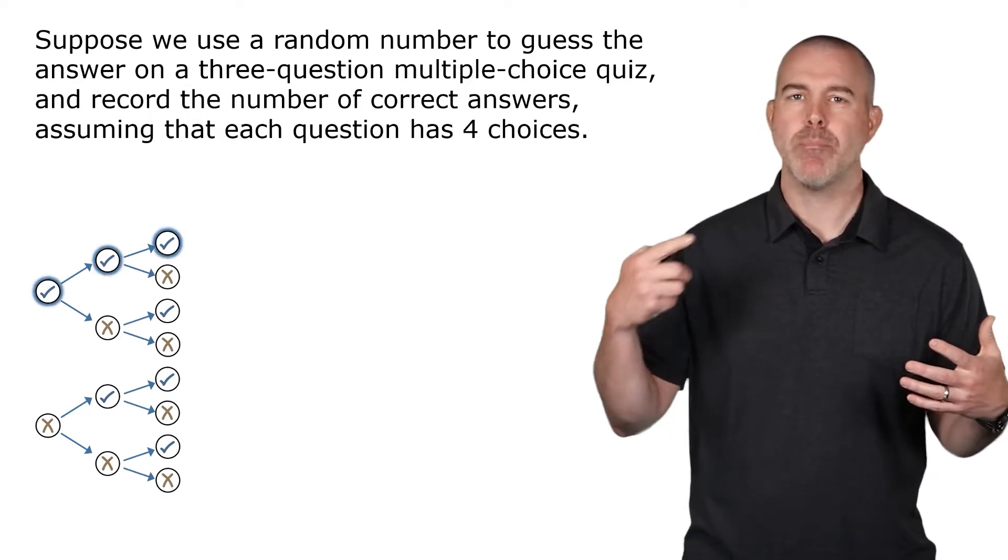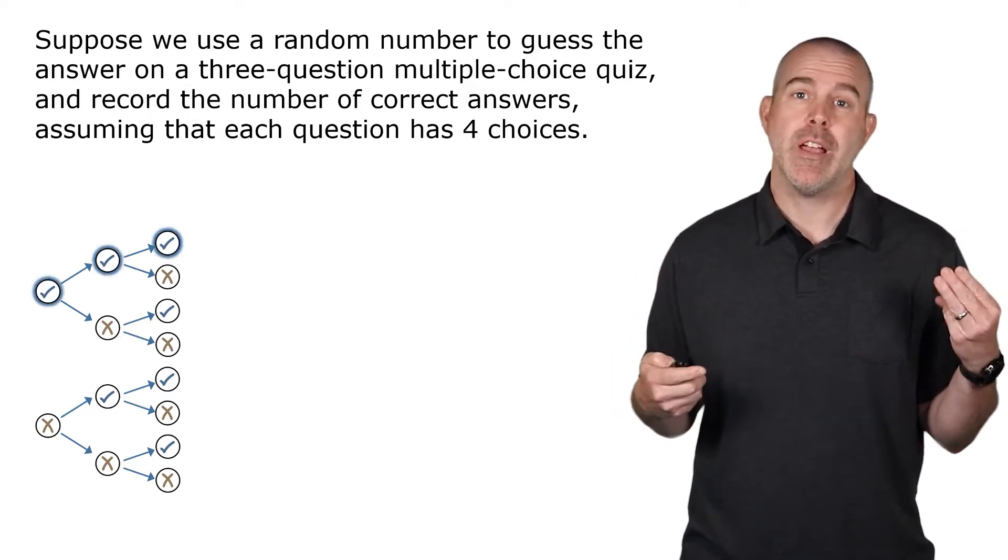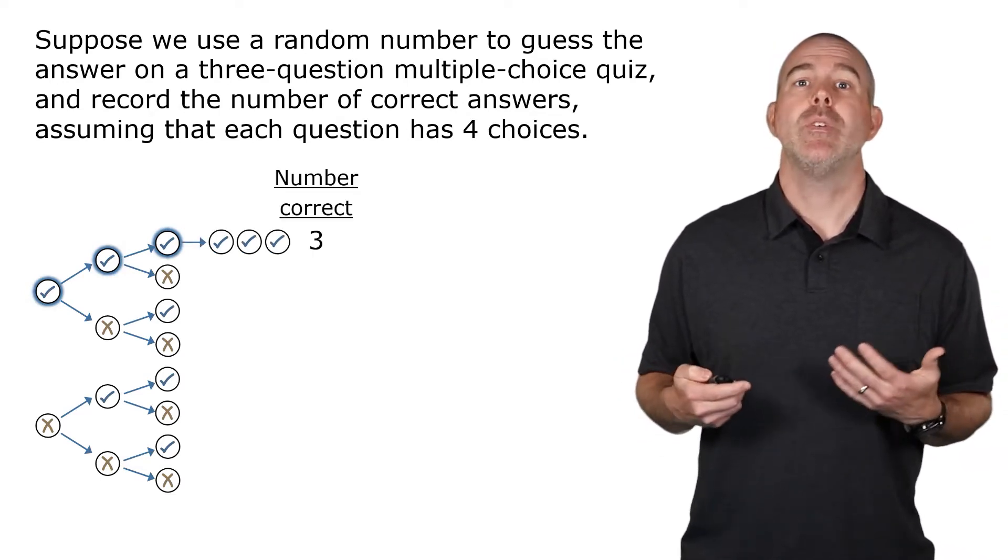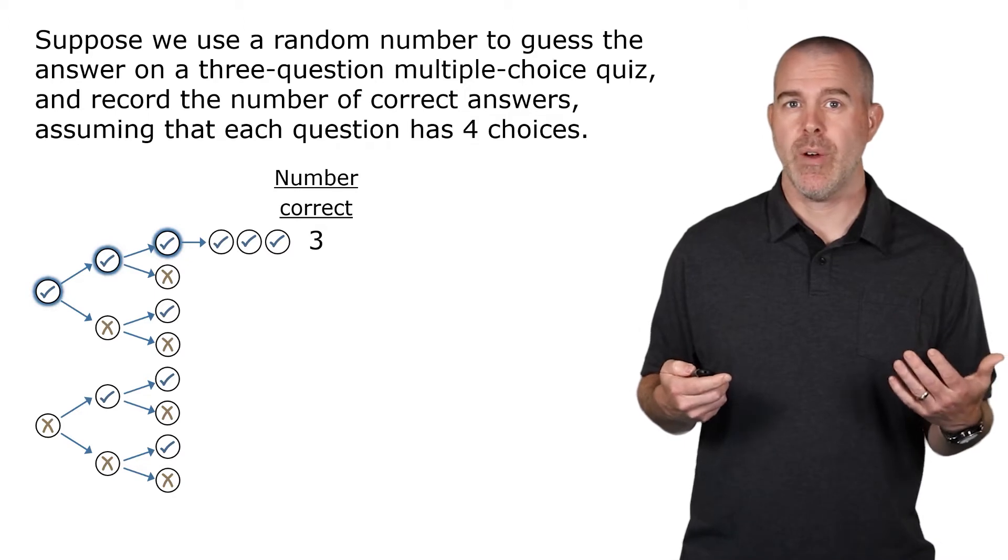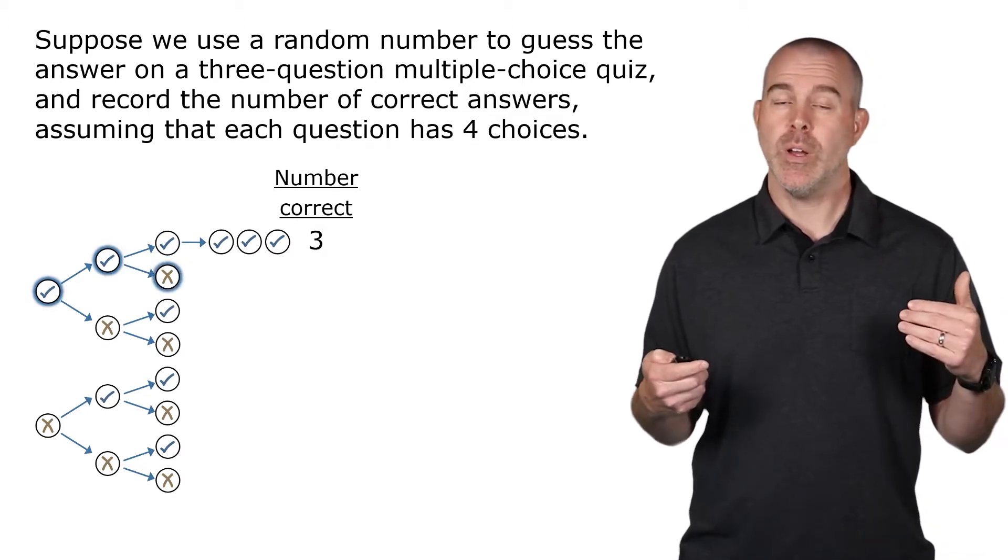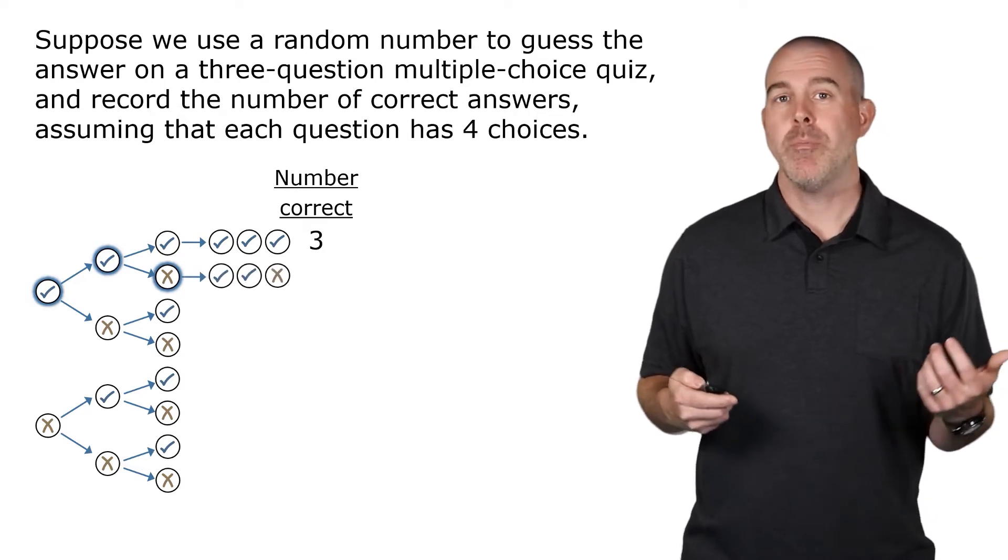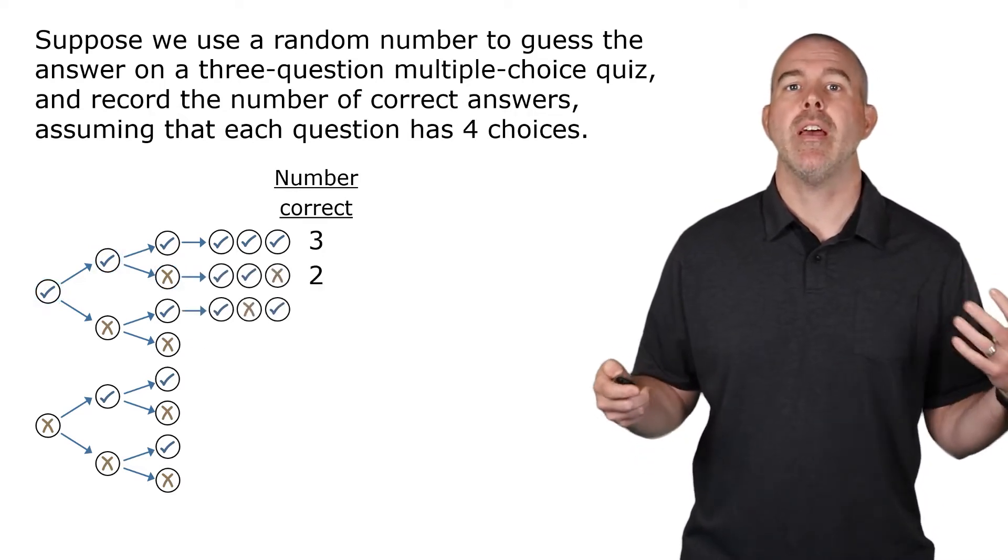If we look at that top row, that would be three correct answers. Correct, correct, correct. If we make a little table, we say, well, that one is three correct answers. Next one down would be right, right, wrong. So that one would be two correct answers. And then for the rest of them, we can continue similarly along that pattern.